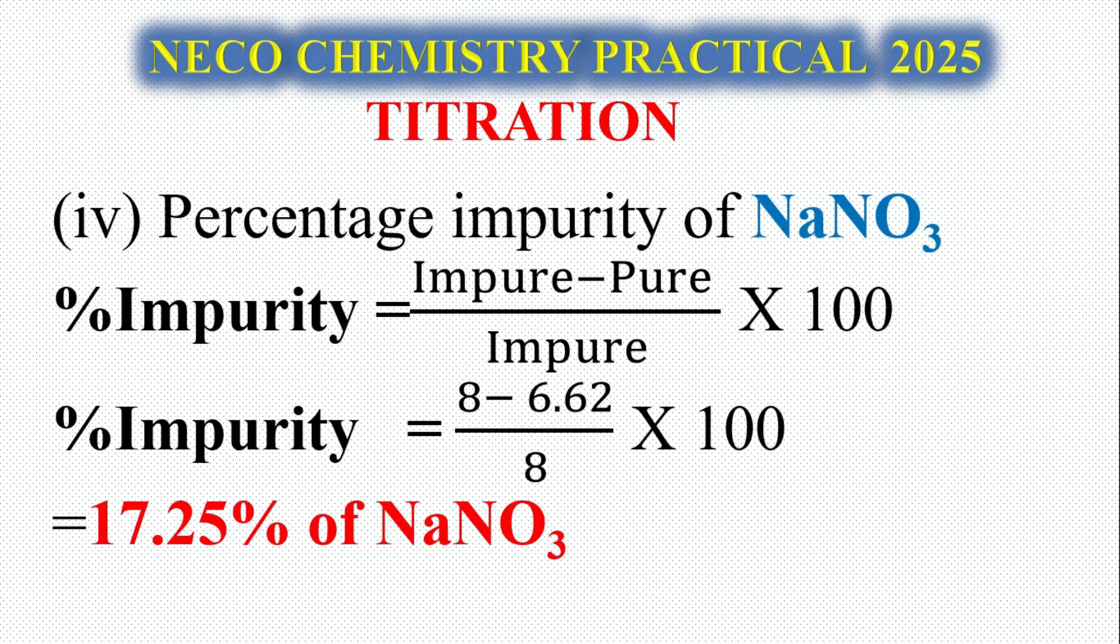Question number 5: Percentage impurity of NaNO3. Impurity is impure minus pure over impure times 100. Our impure is 8 and our pure is 6.62 divided by 8, so our impurity is 17.25% of NaNO3.